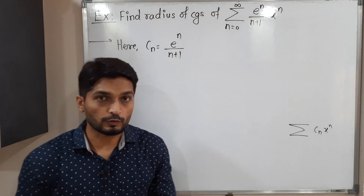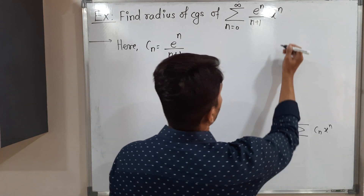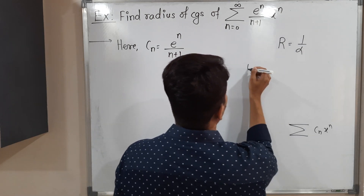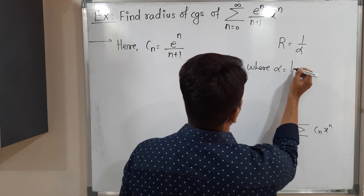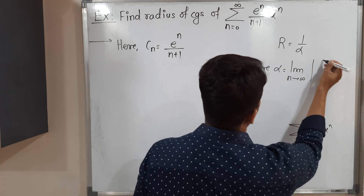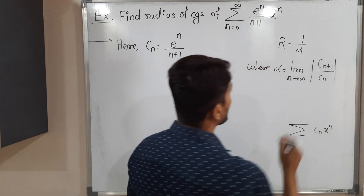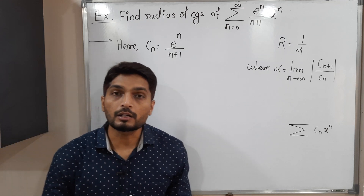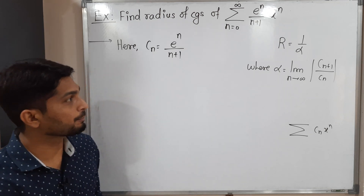So we have to find the radius of convergence. The radius of convergence has the formula R = 1/alpha, where alpha can be calculated as the limit as n tends to infinity of |C_{n+1} / C_n|. Note that alpha has one more formula as well, but for this example I am using this one.